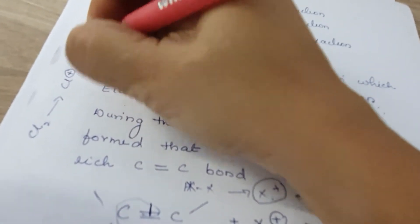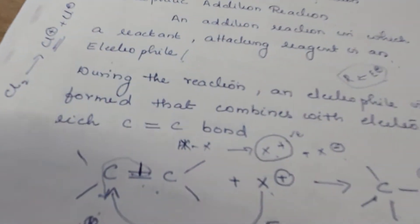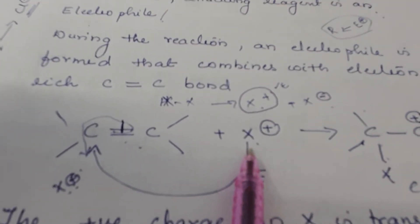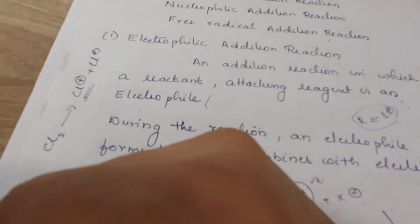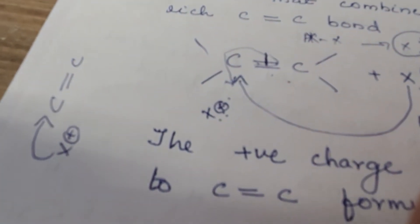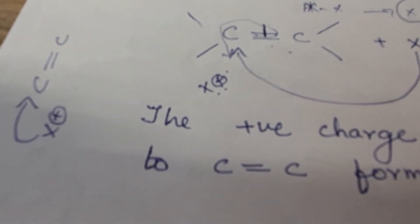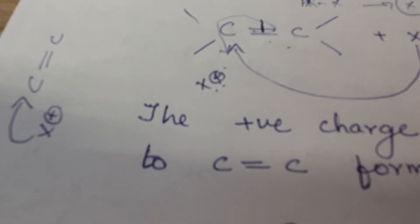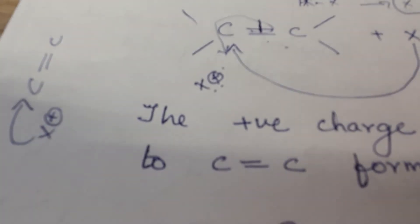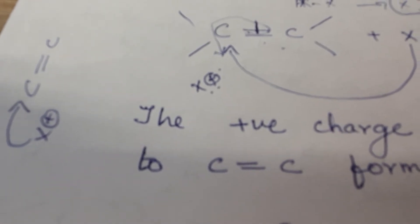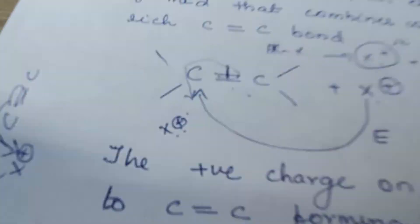The electrophile attacks the double bond. An electrophile is electron deficient — it has fewer than eight electrons and needs to attain stability, so it accepts electrons. When it attacks the double bond, the two pi electrons of the double bond are attracted towards the electrophile. The pi bond is formed by lateral or sideways overlap.